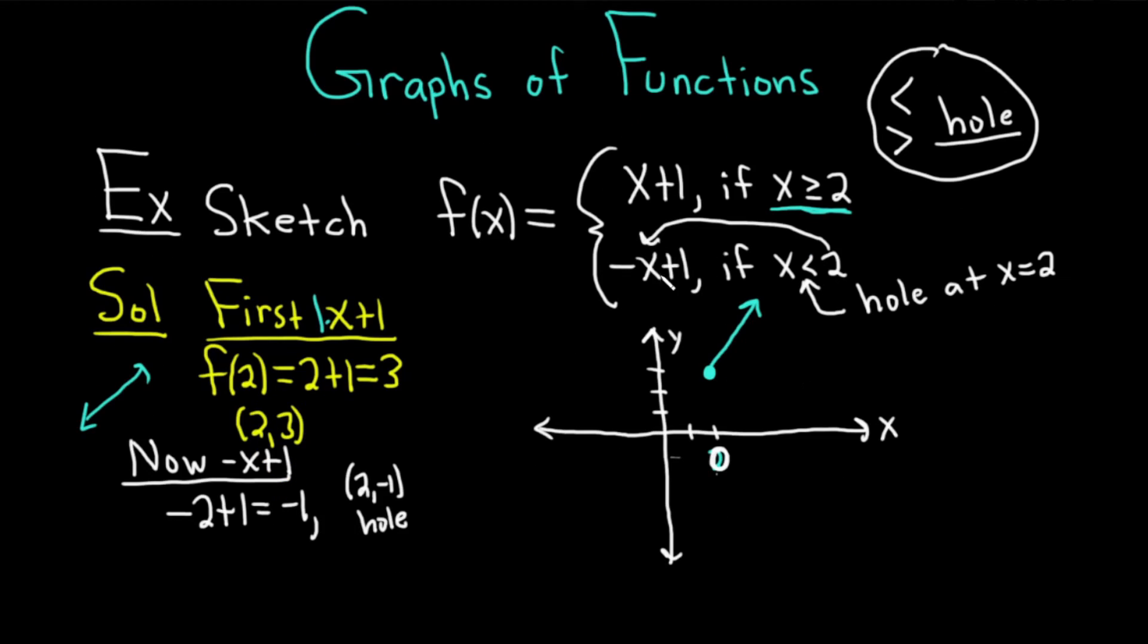Well, you'll notice that if you plug in, for example, 1, if you look at f of 1, you look at the bottom piece because 1 is less than 2. So you get negative 1 plus 1, which equals 0. So when x is 1, y is 0. And it also passes through this point here because if you plug in 0, you get negative 0 plus 1, so you get 1. So it's going to pass through these two points. It's going to go this way.